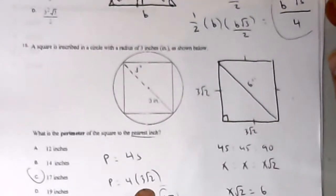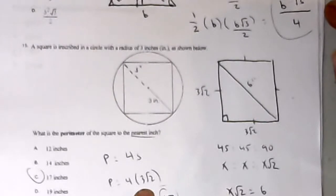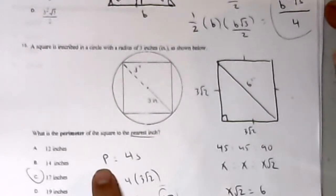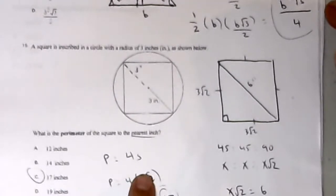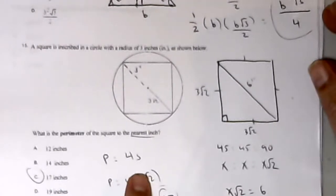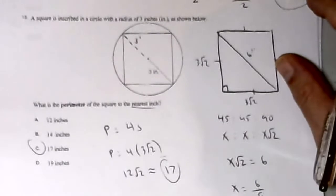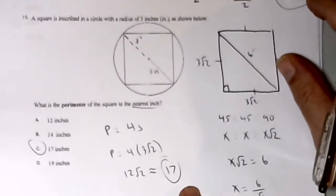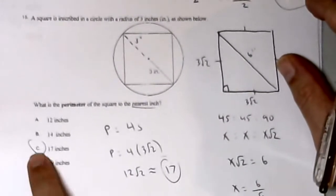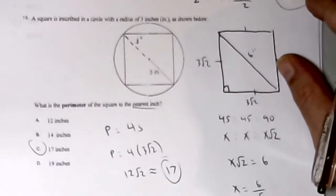The perimeter is 4 times the side length s. The perimeter of a square is 4 times the side. So 4 times 3√2 is 12√2, which to the nearest inch is 17 inches.